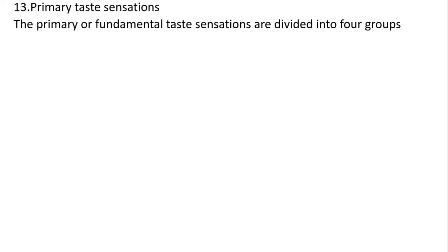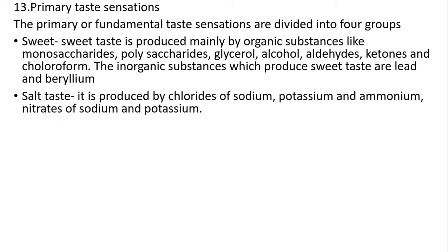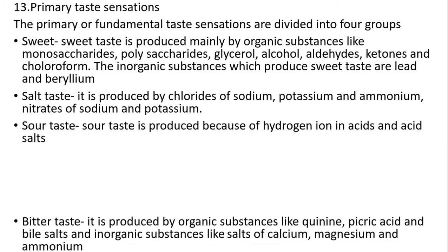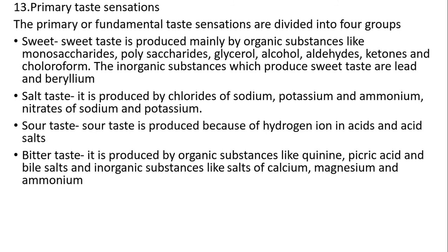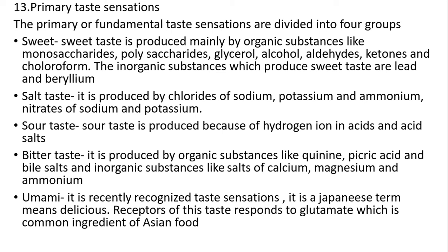Primary taste sensations are divided into four groups. Sweet taste is produced mainly by organic substances like monosaccharides, polysaccharides, glycerol, alcohol, aldehydes, ketones, and chloroform; inorganic substances that produce a sweet taste include beryllium salts. Salt taste is produced by chlorides of sodium, potassium, and ammonium, and nitrates of sodium and potassium. Sour taste is produced by hydrogen ions in acid and acid salts. Bitter taste is produced by organic substances including picric acid and bile salts, and inorganic substances like salts of calcium, magnesium, and ammonium. Umami is a recently recognized taste sensation; it is a Japanese term meaning delicious, and the substance of this taste responds to glutamate, a common ingredient of Asian food.